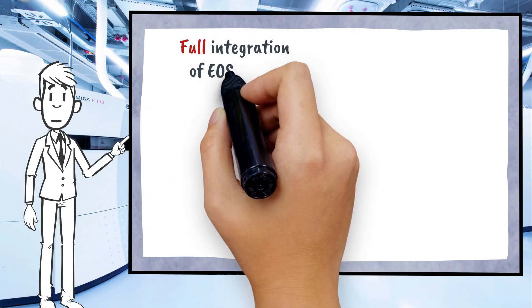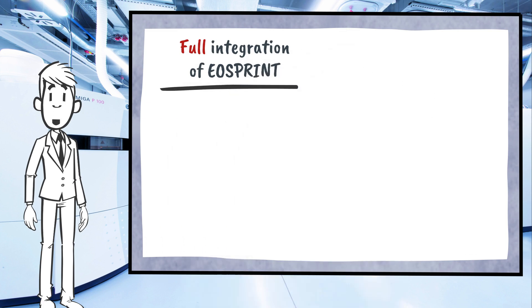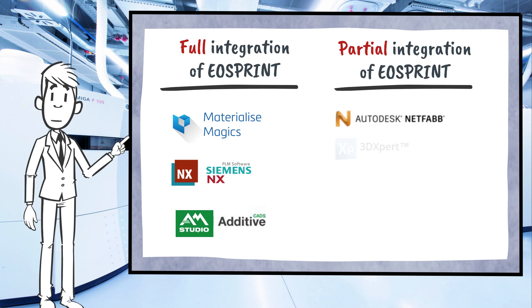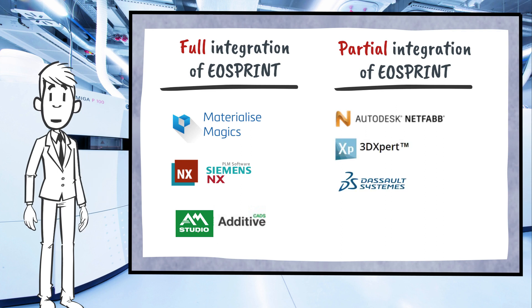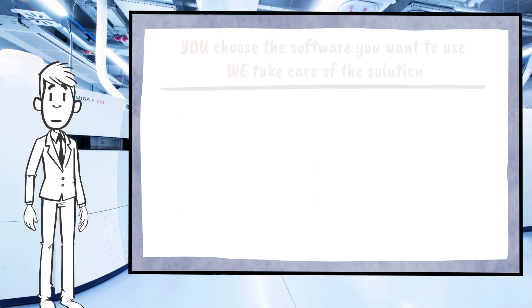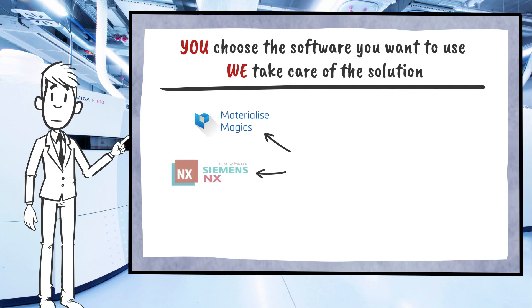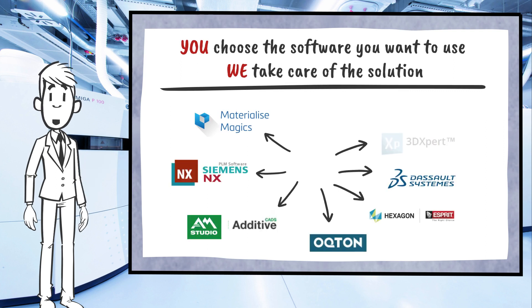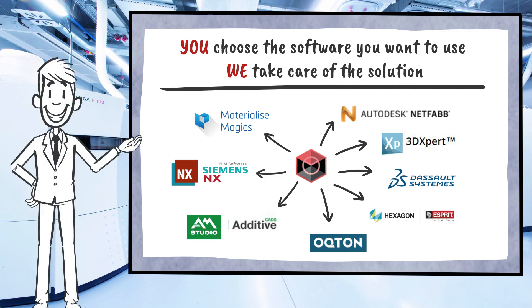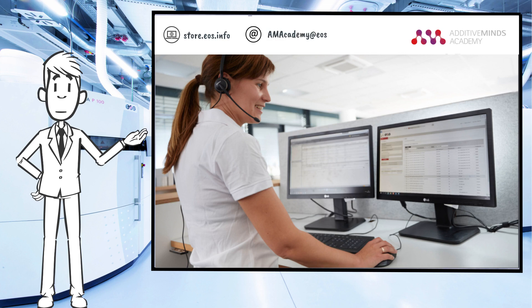EOS works with a variety of software partners. The full integration of EOSPrint is already available for Materialise Magics, Siemens NX, and AM Studio by Additive CADs. EOSPrint is partially integrated in Netfabb, 3D Expert, Dassault Systèmes, Hexagon Esprit, and Octon, and there is more to come. The big advantage of working together with EOS is you choose which software you want to use and we provide the CAM interface for you. Don't hesitate to contact us for more information — we are looking forward to hearing from you.